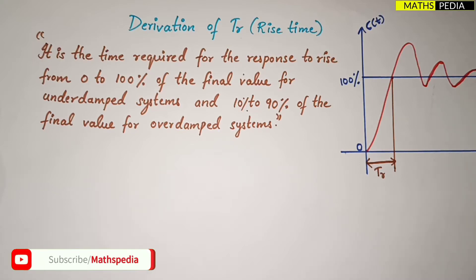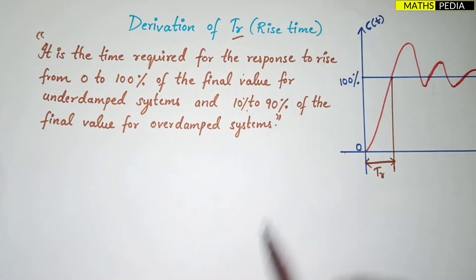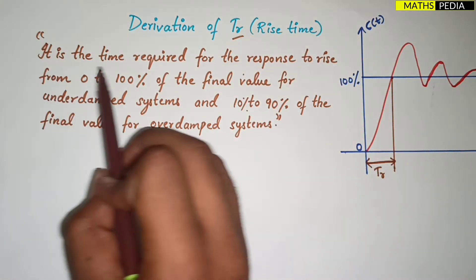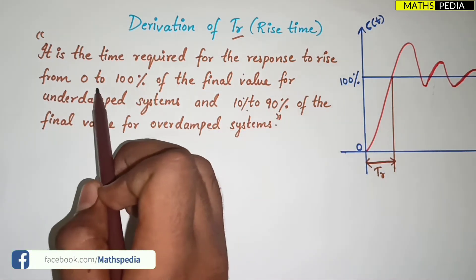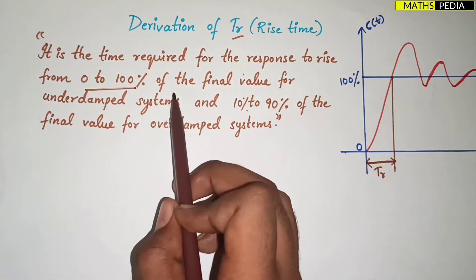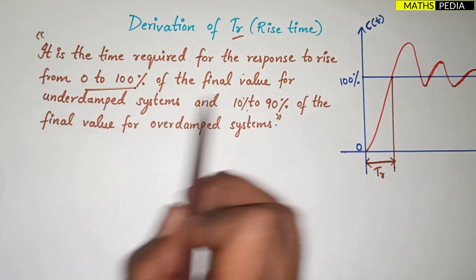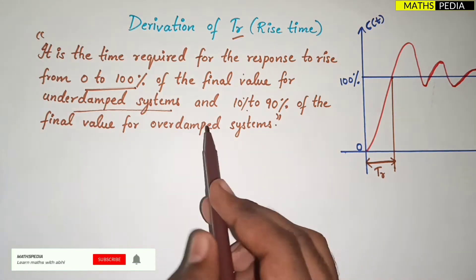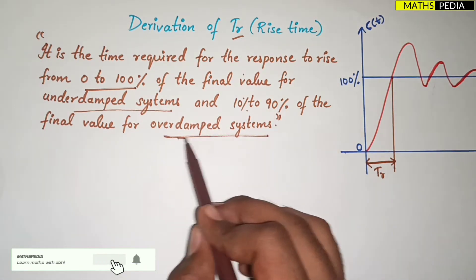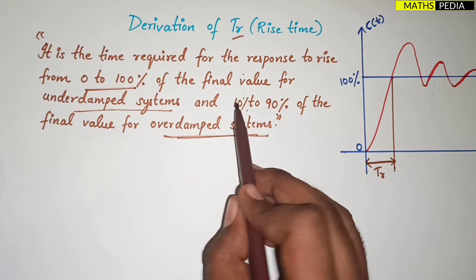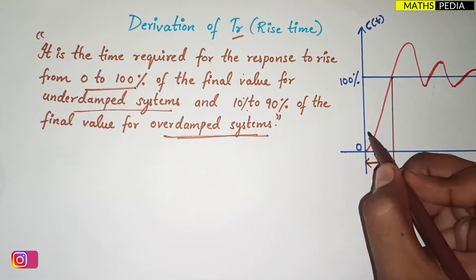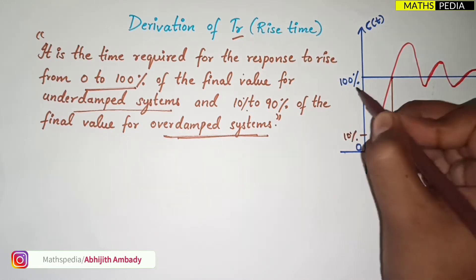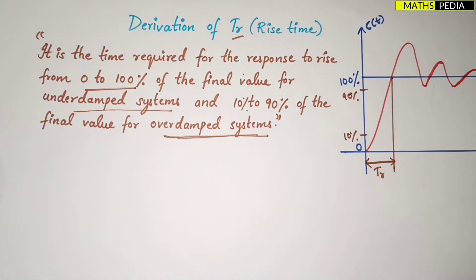In this video we are going to discuss the derivation of rise time. Rise time is denoted by T_r. By definition, it is the time required for the response to rise from 0 to 100 percent of the final value for an under-damped system. For over-damped systems, the rise time is the time required for the response to rise from 10 percent to 90 percent.